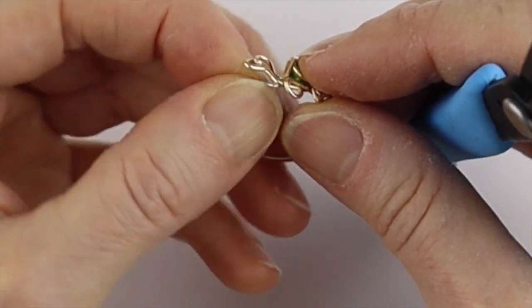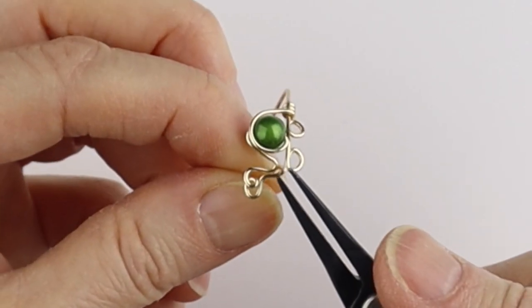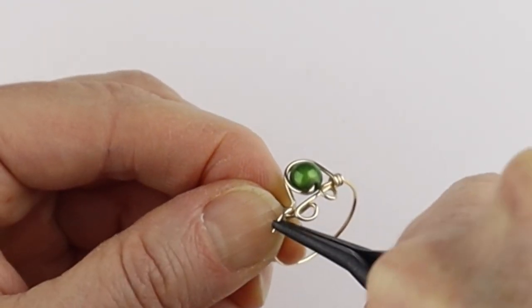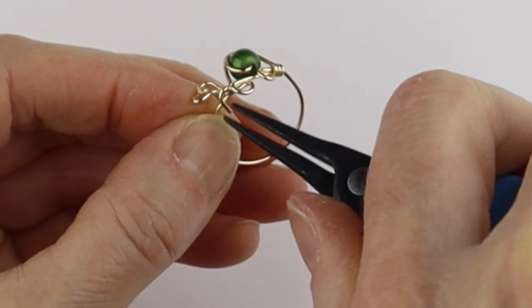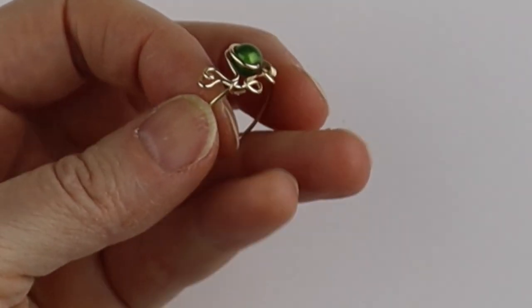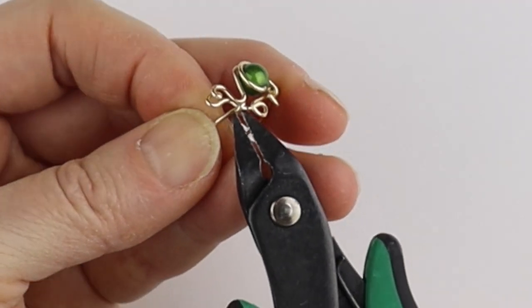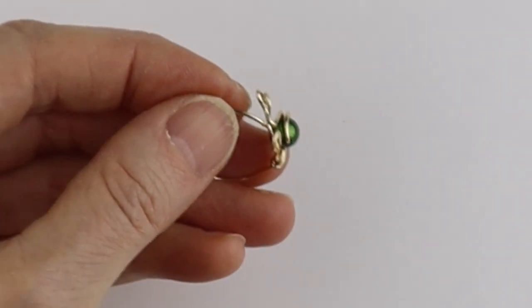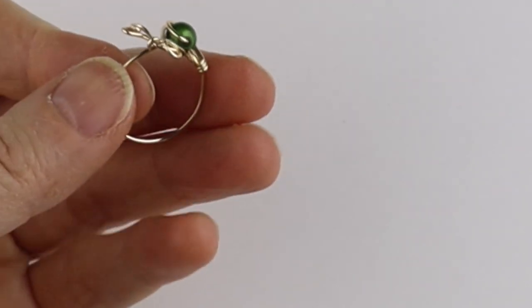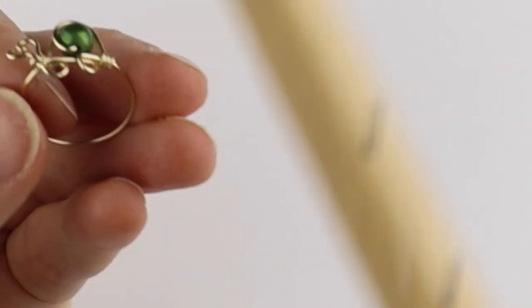Just push it in, take the end, bend it around, give it a good little tug, clip it and make that flush. Just pinch it with your needle nose pliers to get it flush.